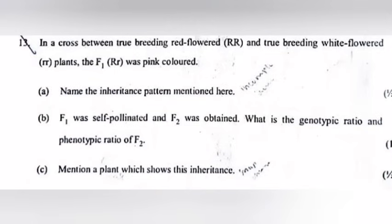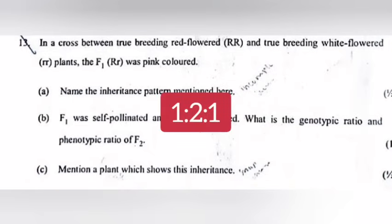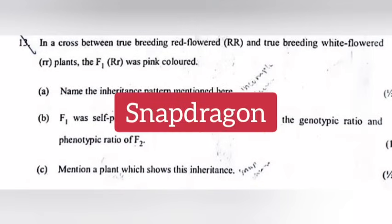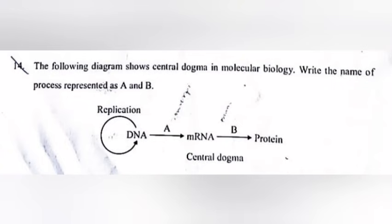F1 was self-pollinated and F2 was obtained. What is the genotypic ratio and phenotypic ratio of F2? Answer: Genotypic ratio 1:2:1. Phenotypic ratio 1:2:1. Mention a plant which shows this inheritance. Answer: Snapdragon.